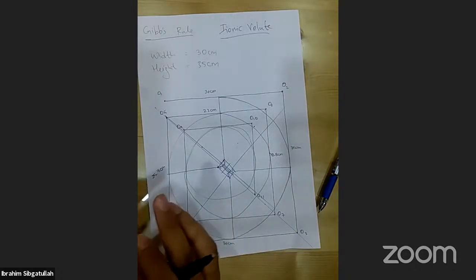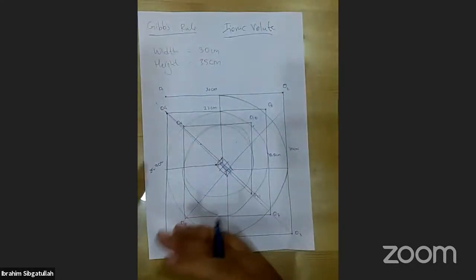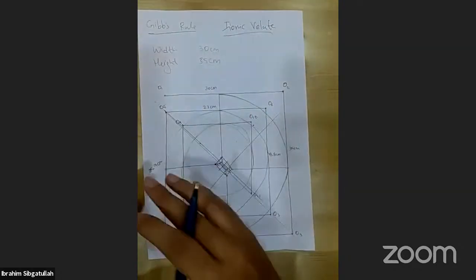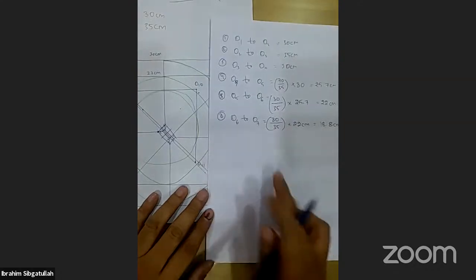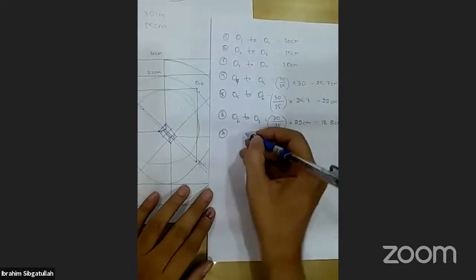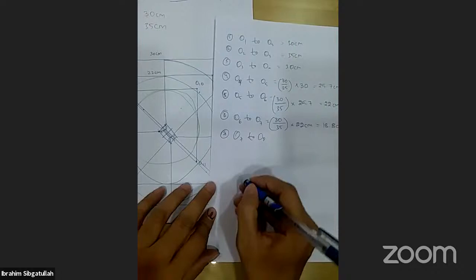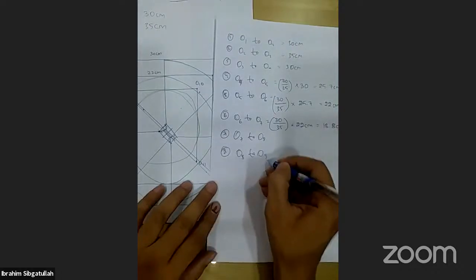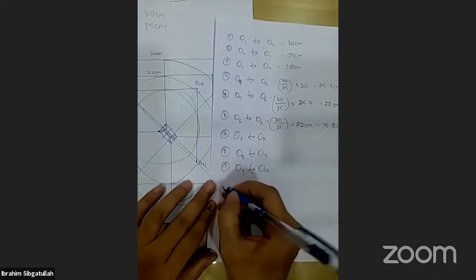This is what Gibbs rule is all about — this is what you have to do. Remember: when you are drafting this, you must simultaneously write down the steps. For example: step 7 was O7 to O8, step 8 was O8 to O9, step 9 was O9 to O10, step 10 was O10 to O11.